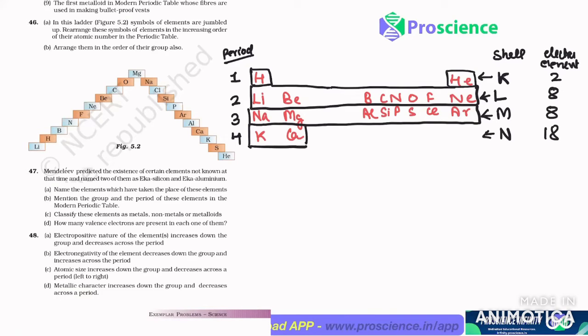तो that means यहां पर 10 plus 10 elements बीच में और होंगे. तो 2, यह 10, और यहां पर 2, 10, 18 elements total. ऐसा हमारा periodic table बना हुआ. तो मैं periodic table याद करने की भी जरूरत